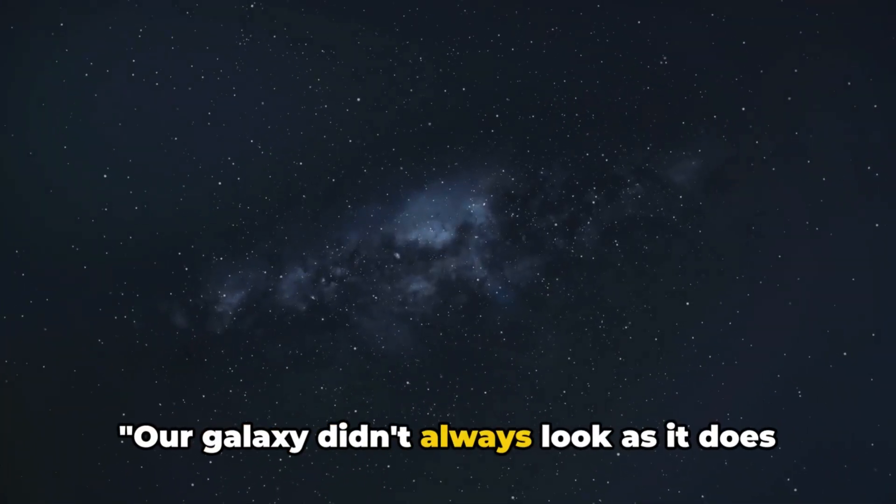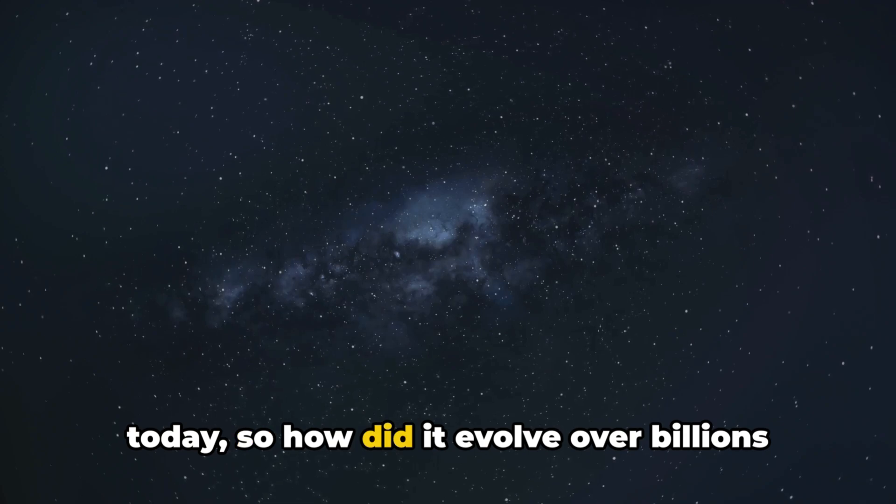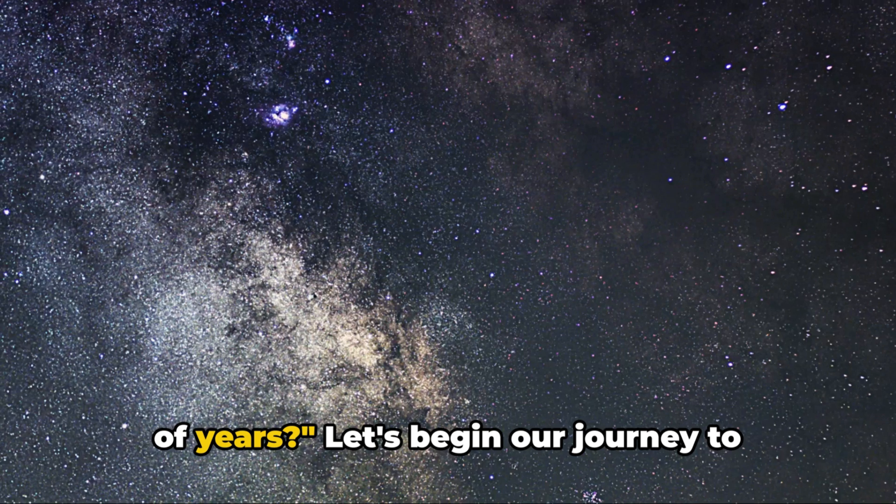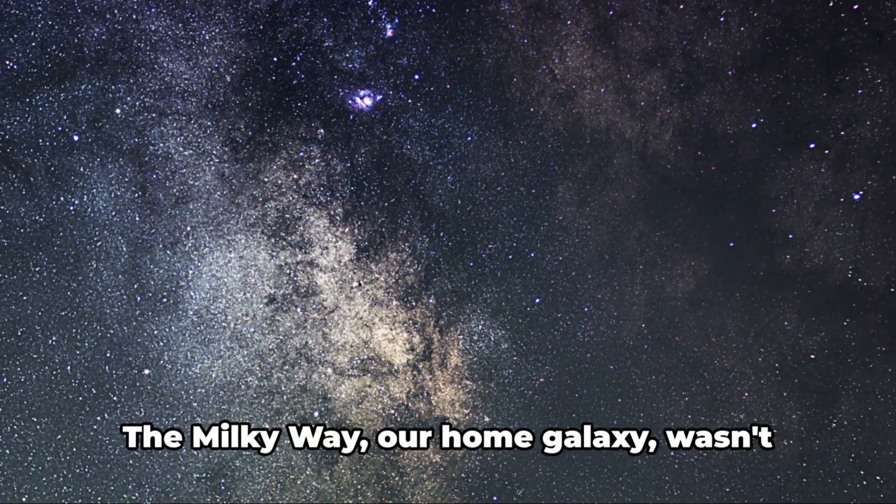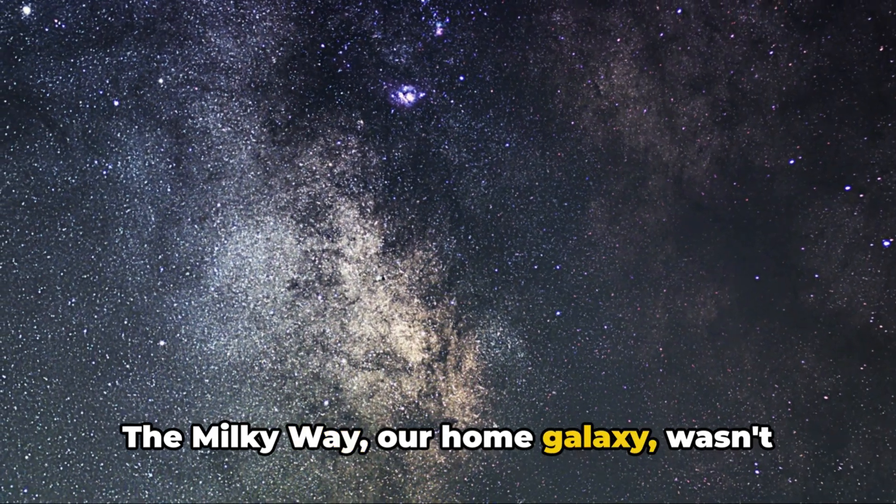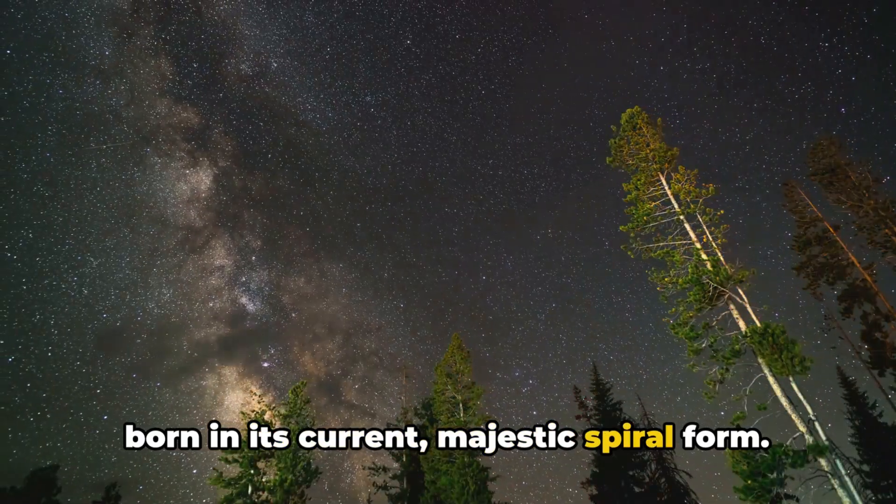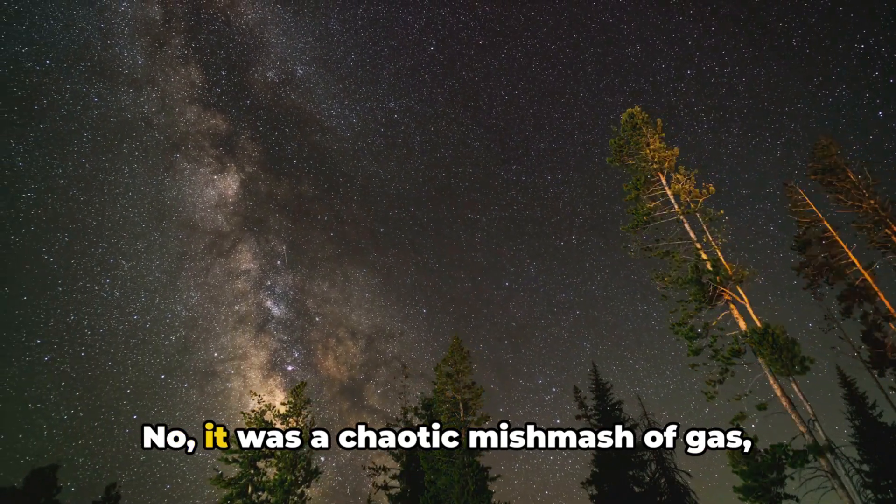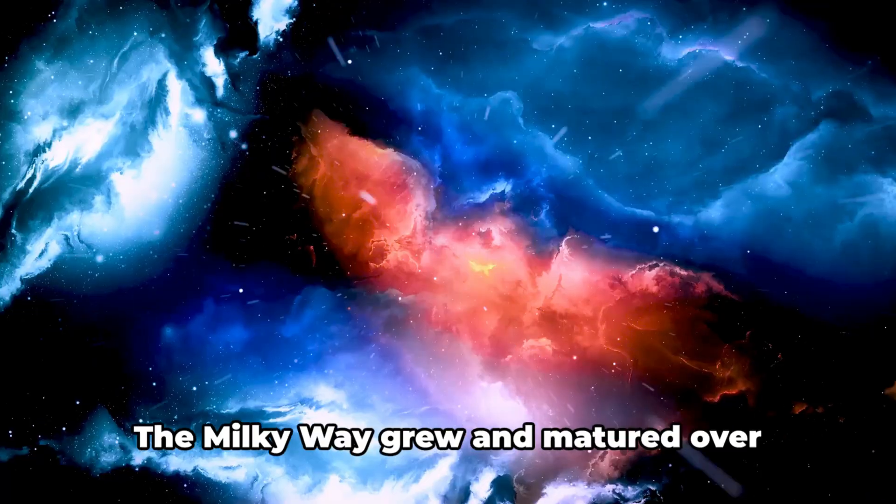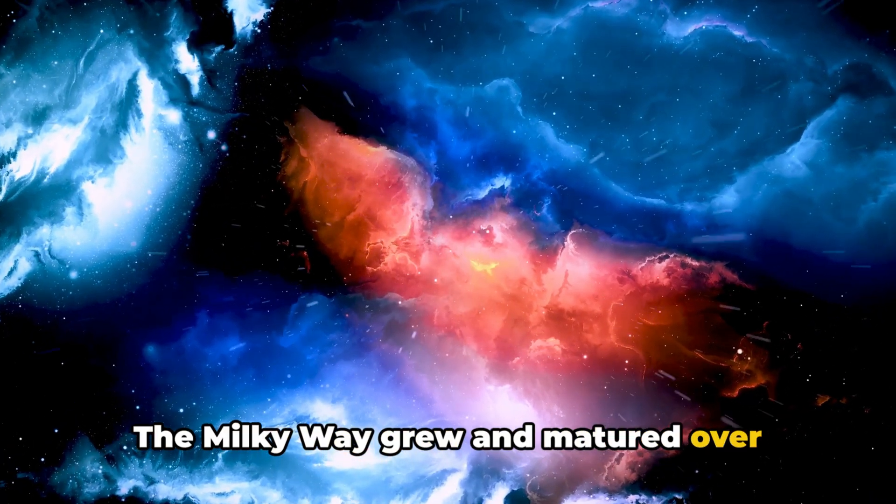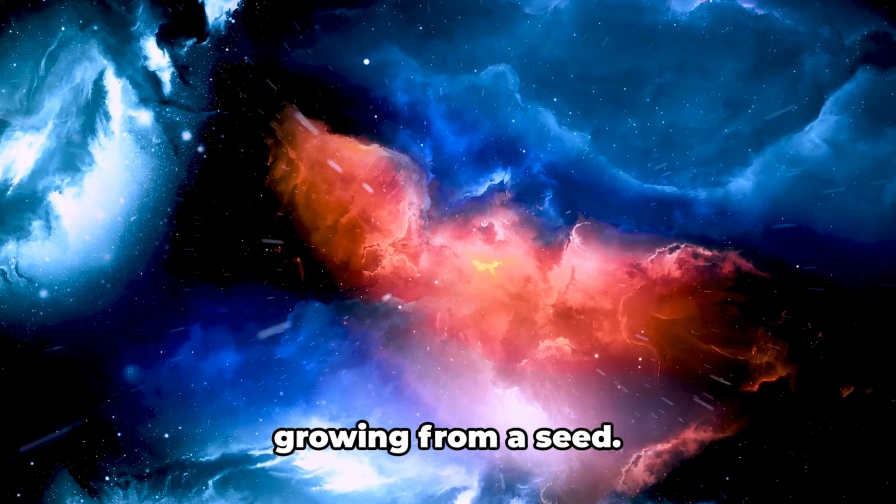Our galaxy didn't always look as it does today, so how did it evolve over billions of years? Let's begin our journey to understanding this cosmic transformation. The Milky Way wasn't born in its current majestic spiral form. It was a chaotic mishmash of gas, dust, and a smattering of early stars. The Milky Way grew and matured over billions of years, much like a tree growing from a seed.